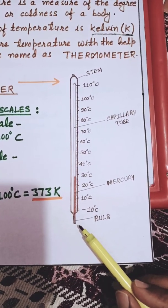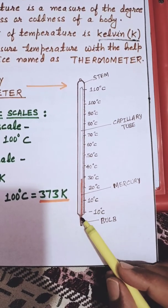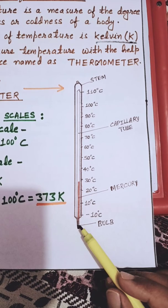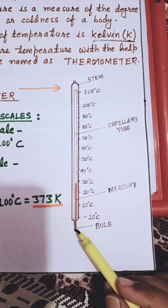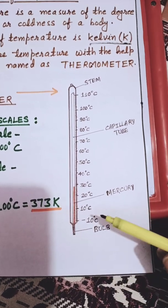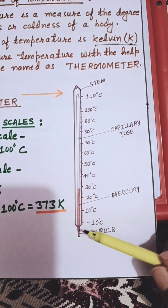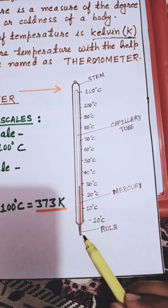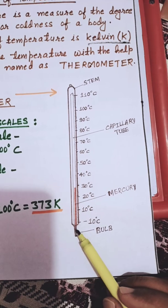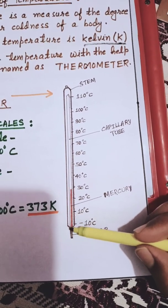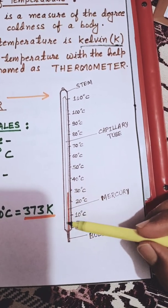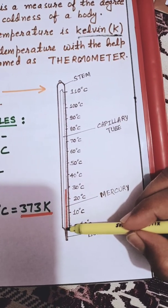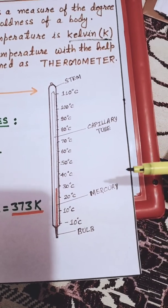The bulb is filled with pure mercury. You might have seen at home that this bulb is shiny and metallic in color. When we measure temperature, this part of the thermometer becomes hot, and the mercury inside starts rising. The rising of mercury is shown with a red line inside the stem. This is how the thermometer works.